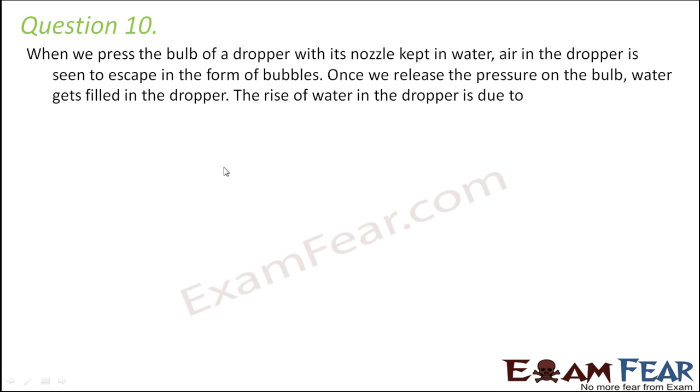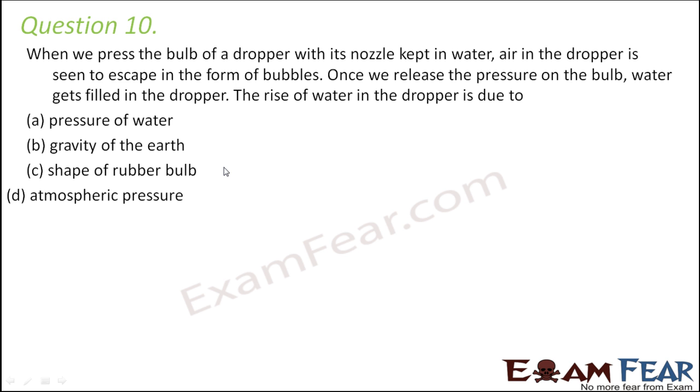So when we try to drink through a straw, we suck in. So the pressure inside the straw decreases. Pressure outside is more. So pressure outside forces the water in the glass to rise up through the straw. So the same thing happens in case of this dropper also. So this happens due to pressure of water, gravity of the earth, shape of rubber bulb or atmospheric pressure. Yes, exactly. It happens due to atmospheric pressure. Because since atmospheric pressure is quite high as compared to the pressure inside the dropper, therefore the atmospheric pressure will force the liquid to rise through the dropper.